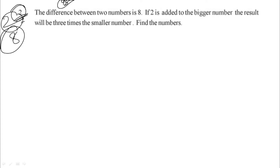The difference between 2 numbers is 8. If 2 is added to the bigger number, the result will be 3 times the smaller number.